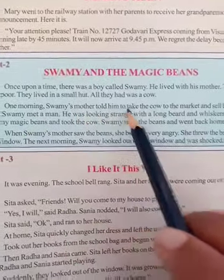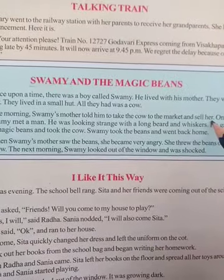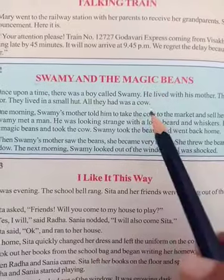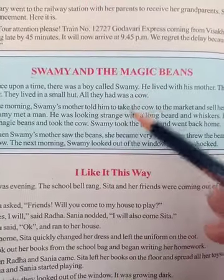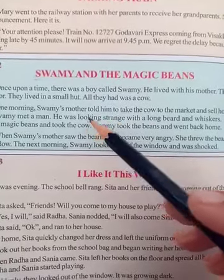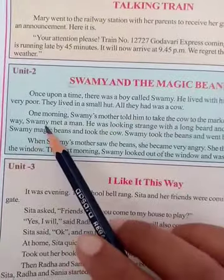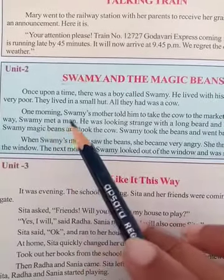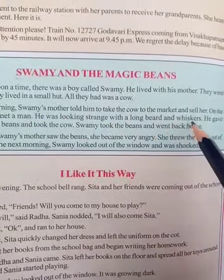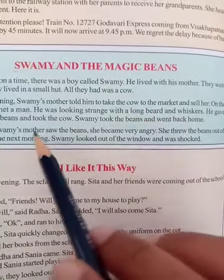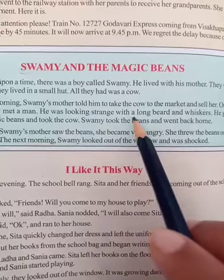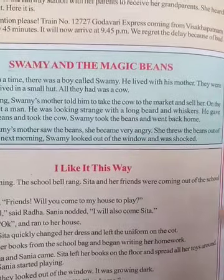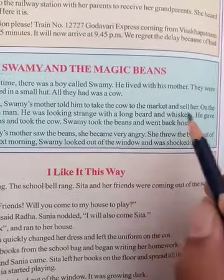One morning, Swami's mother told him to take the cow to the market and sell her. They were poor and didn't have money, so she told Swami to sell the cow and bring money. On the way to the market, Swami met a man who was looking strange with a long beard and whiskers. We already saw that person in the picture - the strange sadhu.